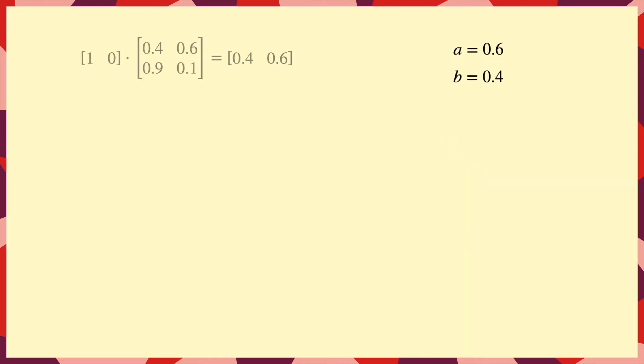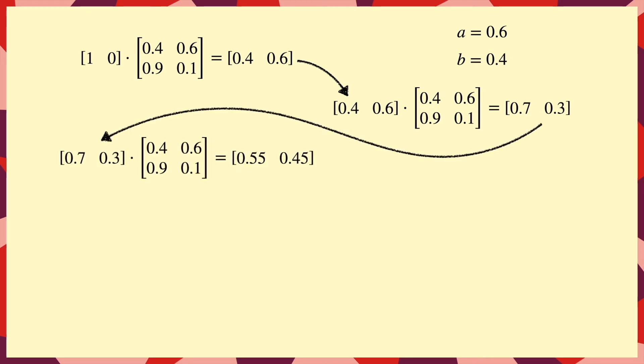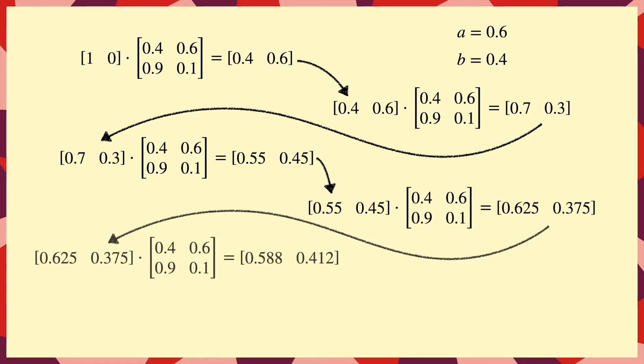Starting from state A, we've already seen the probabilities after the first two steps, but if we carry on beyond that, and look at what happens each time, we can see a pattern starts to emerge. With each step, the probabilities get closer and closer to those in the stationary distribution.